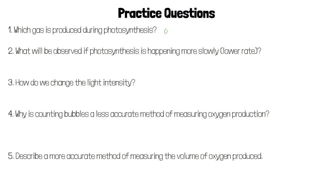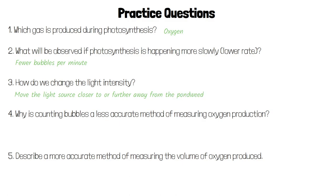The gas produced during photosynthesis is oxygen. If photosynthesis is happening more slowly, we would observe fewer bubbles of oxygen gas being produced per minute. To change the light intensity, we can move the light source either closer to the pond weed or further away. Counting bubbles is a less accurate method of measuring oxygen production because bubbles may be different sizes, or there may be too many to count.